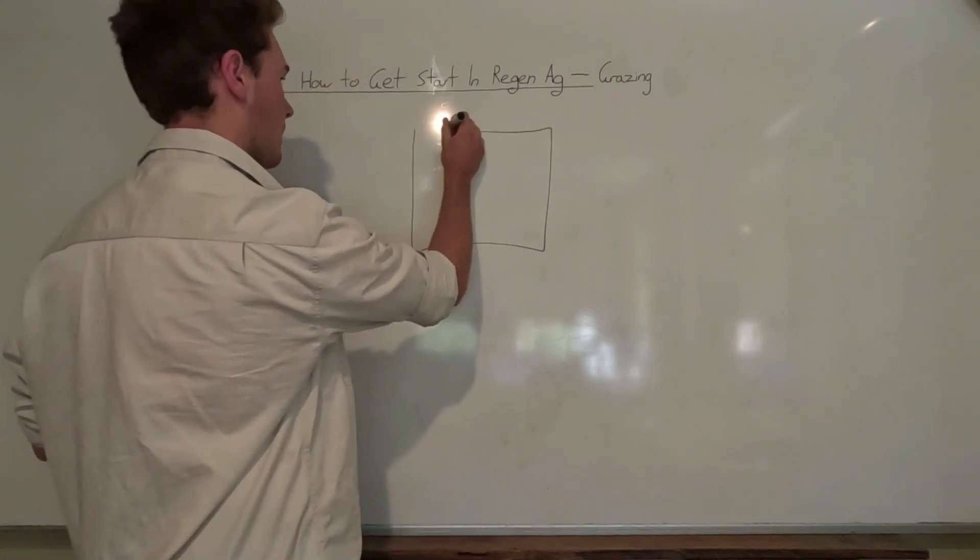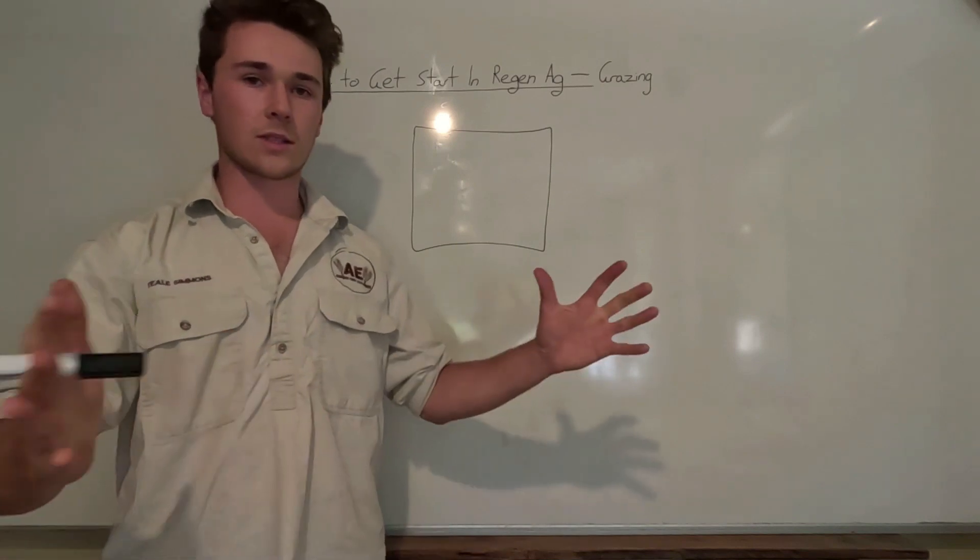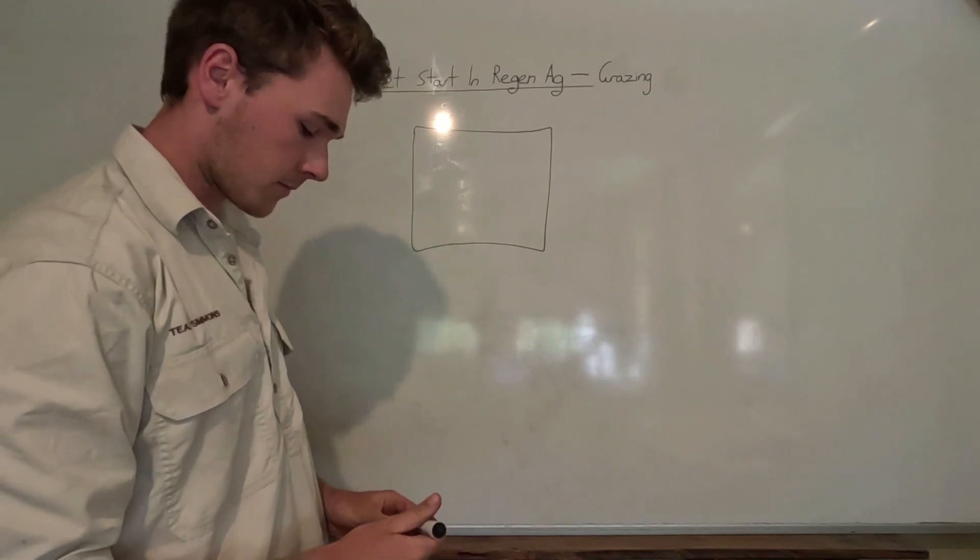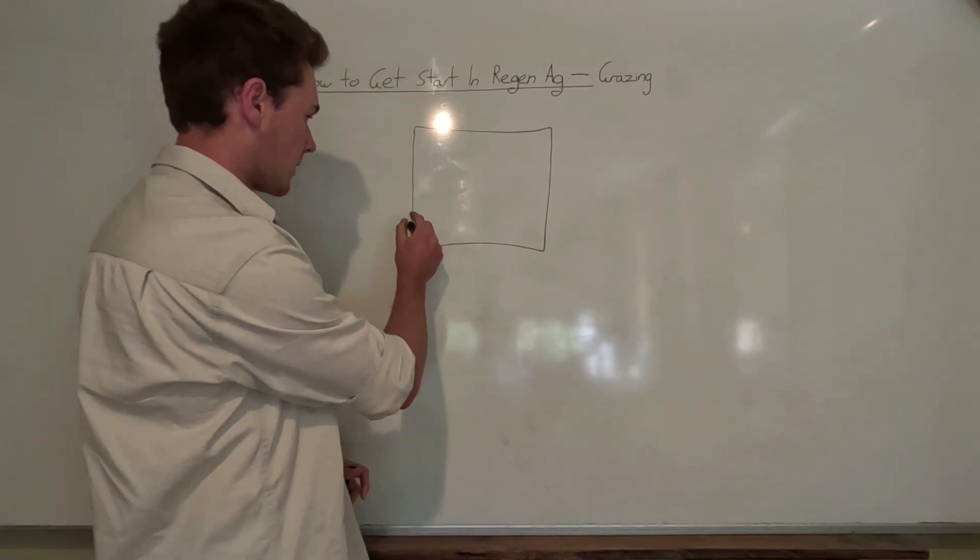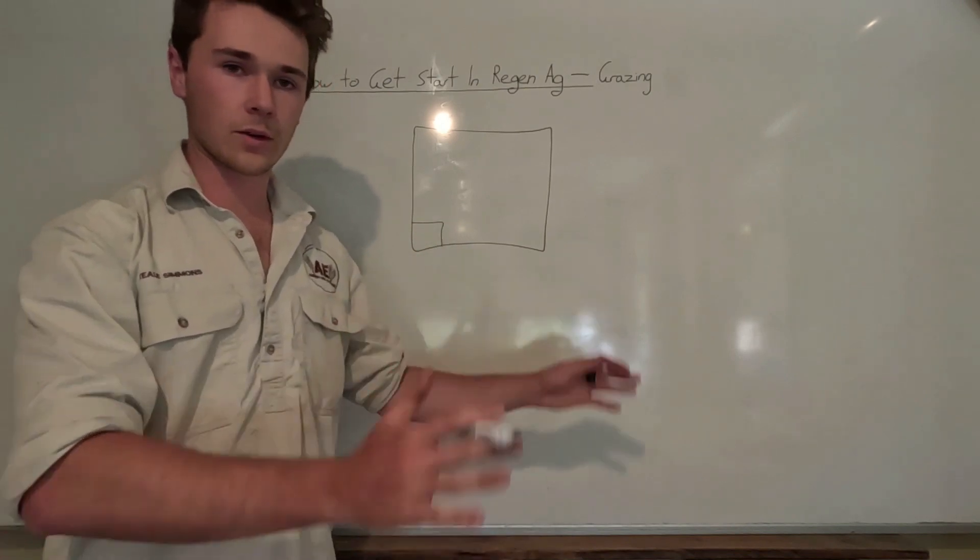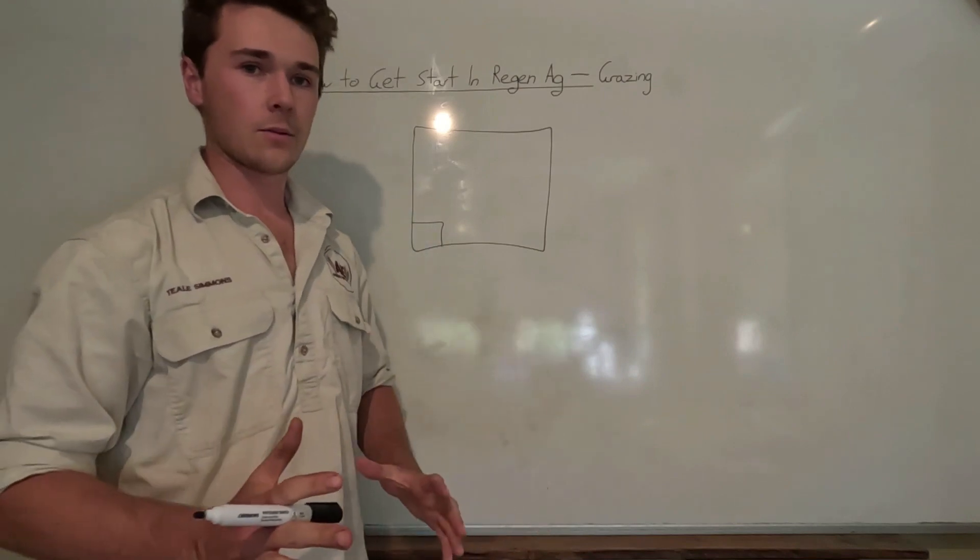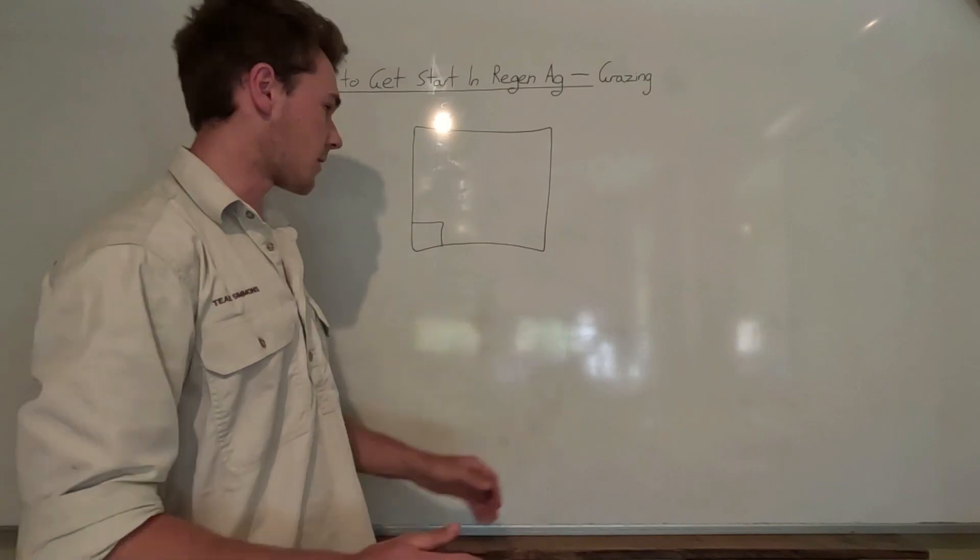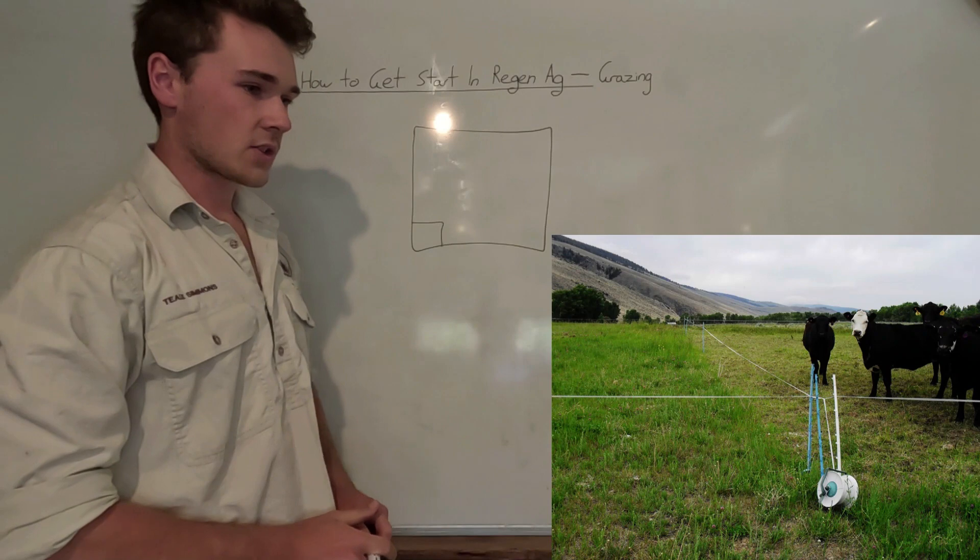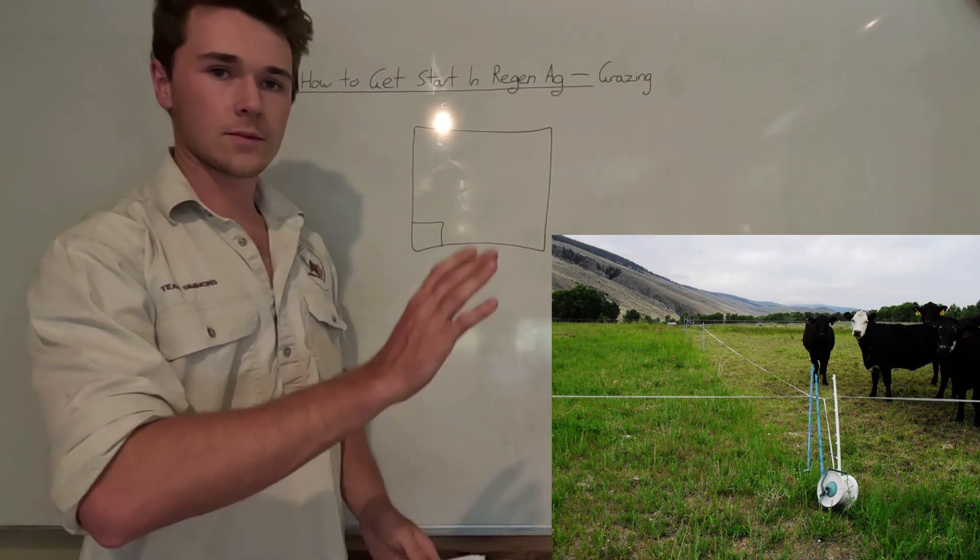So say this is your farm, say you just continuously graze or you have a rotation grazing program. What I want you to do is I want you to just section off a little bit of a paddock. Now it might be a hectare or whatever you want to section off, we can all agree one hectare won't put you into bankruptcy. What I want you to do is fence that off with just cheap electric fencing, nothing super crazy.